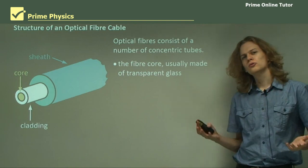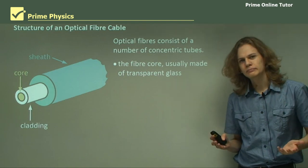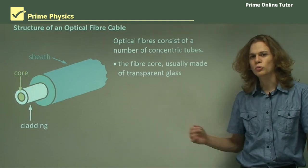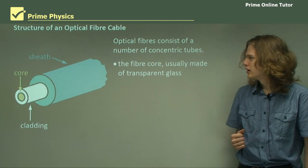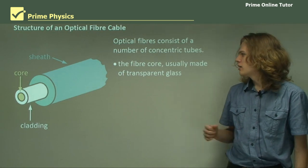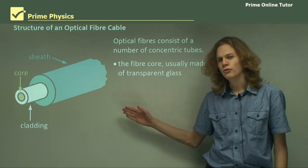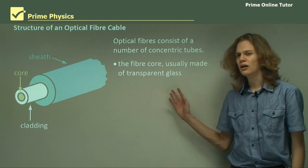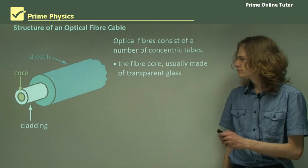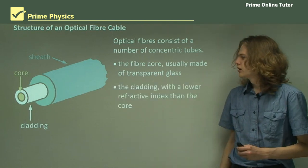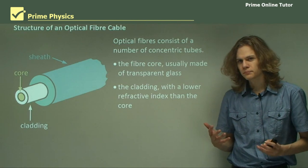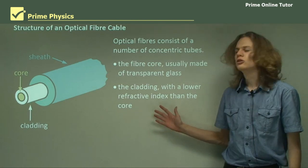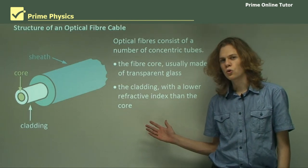So how do optical fibers work? Well we have a number of layers in an optic fiber. We have a fiber core right in the middle that will be made of something like glass. Outside we'll have a cladding. Now the cladding has to have a lower refractive index than the core.